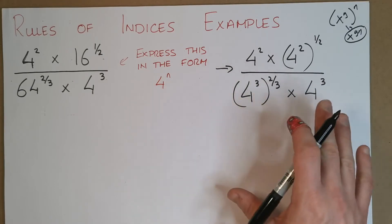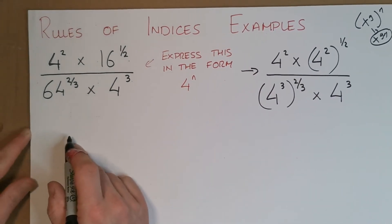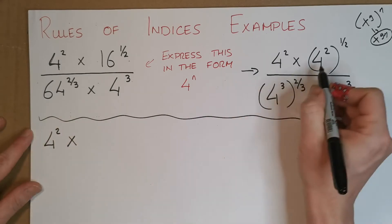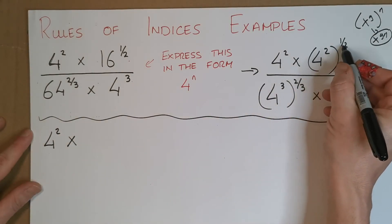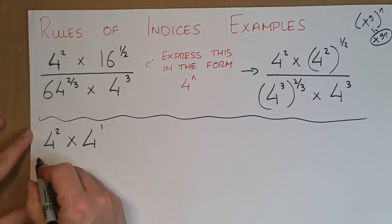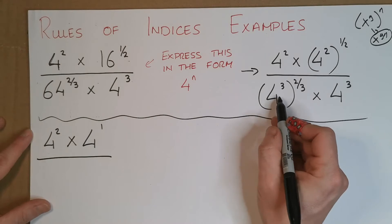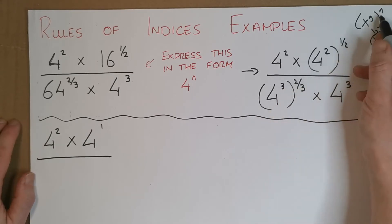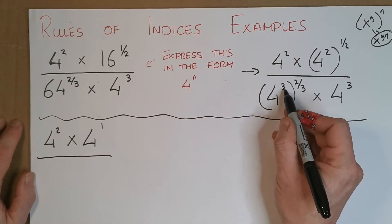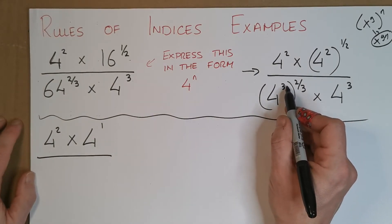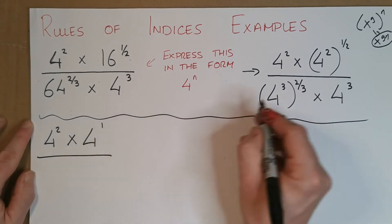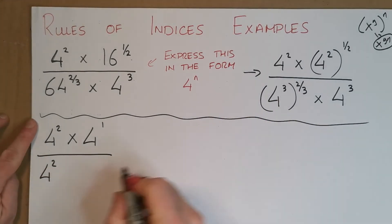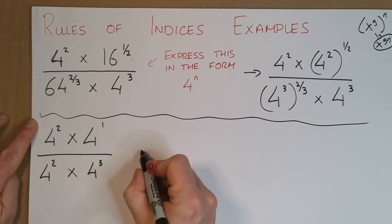Let's write this step out. So 4 squared stays for now. Then 4 squared all to the one half: multiplying the powers gives 4 to the power of 1. Moving to the denominator: 4 cubed all to the power of two thirds — multiply 3 by two thirds: 3 times two thirds equals two (top times top, bottom times bottom: 6 over 3 = 2). So that becomes 4 squared. Something that looks really tricky ends up being 4 to the power of 2. And the last part is just 4 to the power of 3.